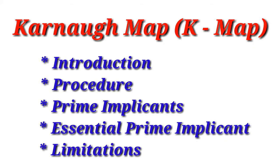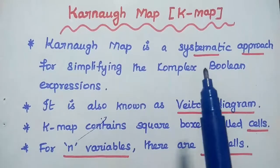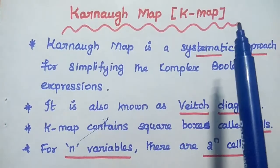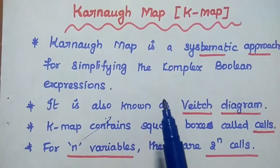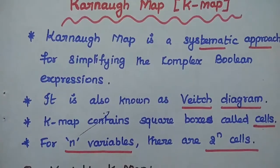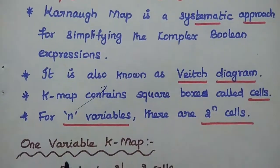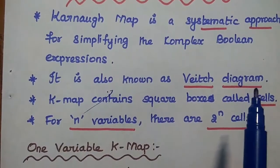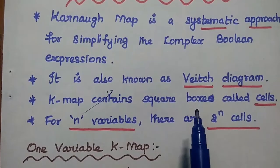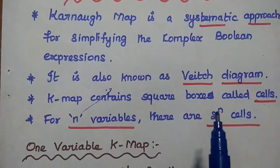Dear students, now we are going to discuss the basics of Karnaugh map in detail. The Karnaugh map, simply called as K-map, is a systematic approach for simplifying complex Boolean expressions. It is mainly used to simplify complex Boolean functions. It is also known as the Veitch diagram because this map method was first proposed by Veitch and then modified by Karnaugh.